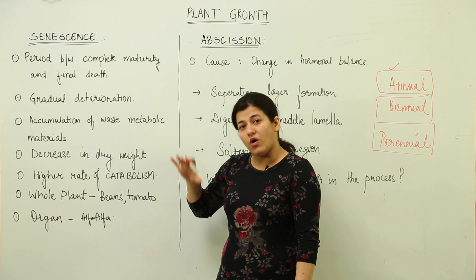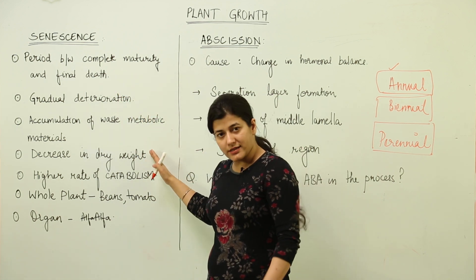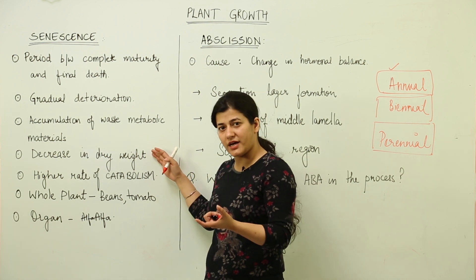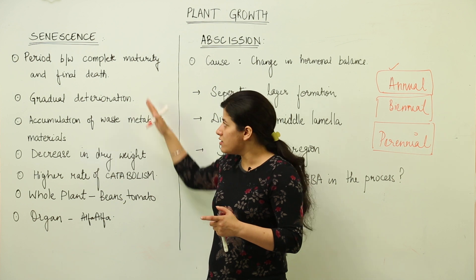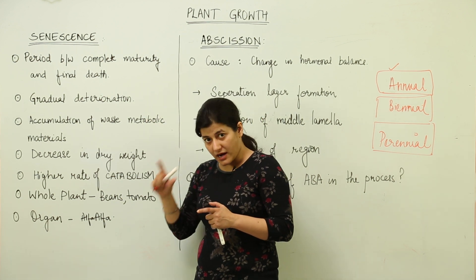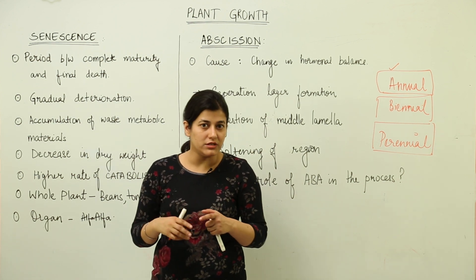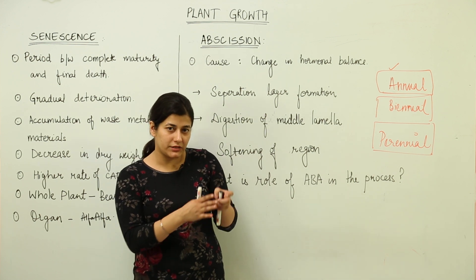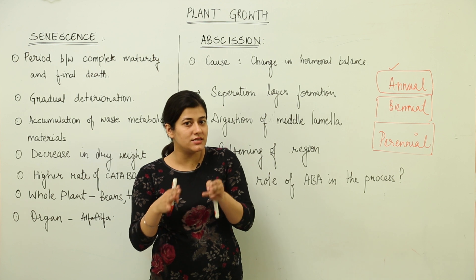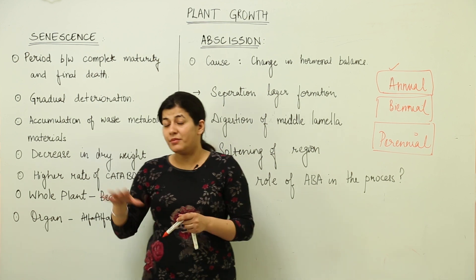For organ death, a leaf or some branch has to undergo senescence — these processes take place in that particular plant part, not in the entire plant. If we compare it with humans, once the reproductive phase is over, senescence starts and the entire body starts deteriorating, leading to death. But in the case of plants, we often see organ death.